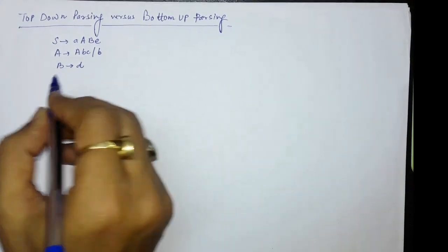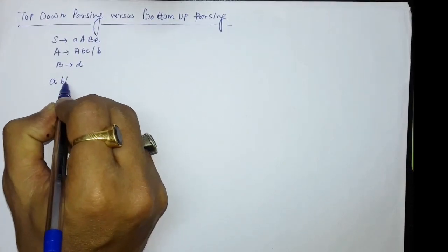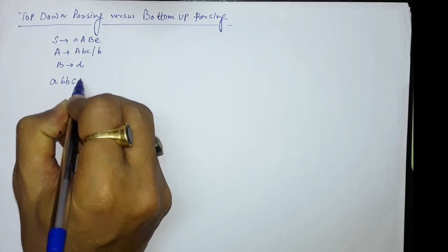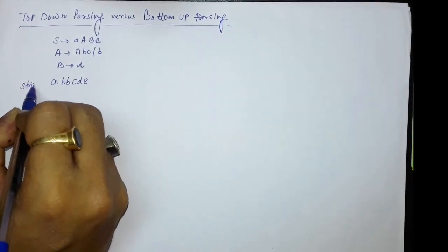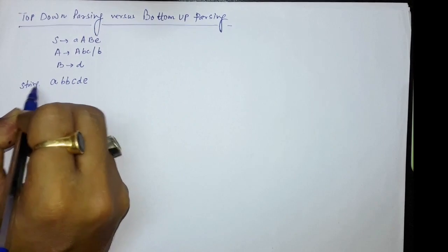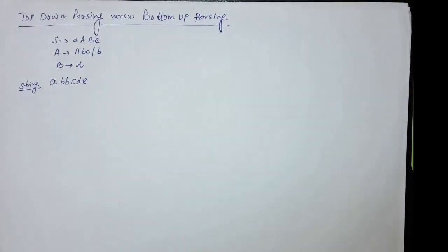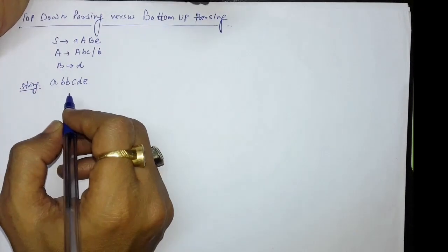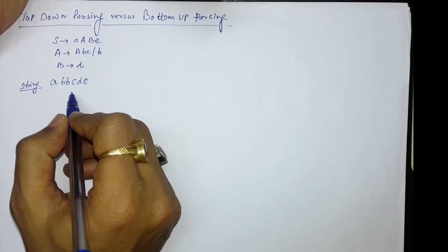Let us say we have to generate the string: small a, small b, small b, small c, small d, and small e. This is the string which needs to be generated, and we want to check if this string is according to the grammatical rules defined — that is, whether the string conforms to the given grammar productions.